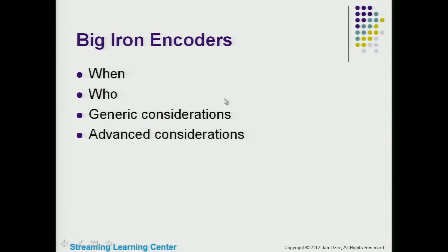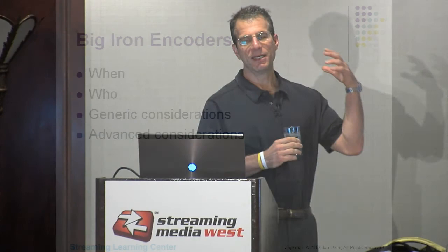For each category, I tried to identify when you'd want to choose an option in that category, who the main players are, generic considerations — things you have to check any time you buy an encoding tool, like does it output the streams you want, does it accept your inputs — and then advanced considerations: the things you really need to think about to differentiate the final candidates.